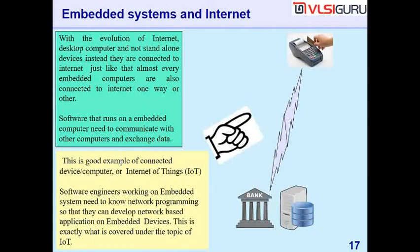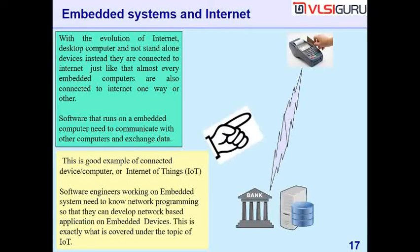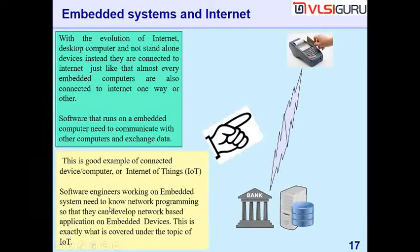With the evolution of the internet, desktop computers are no longer standalone — they are connected to the internet, and the same is true for almost every embedded computer. Software running on embedded computers needs to communicate with other computers to exchange data. Software engineers working on embedded systems need to know network programming so they can develop network-based applications on embedded devices — and this is exactly what is covered under the topic of IoT.